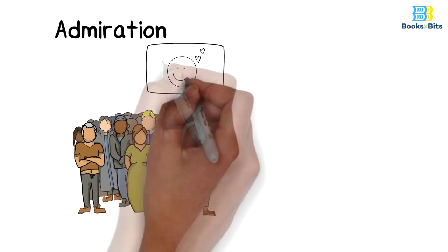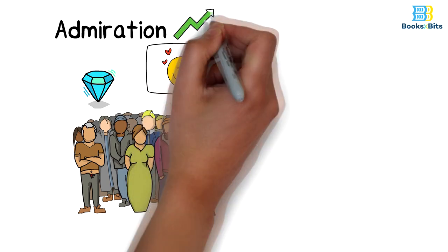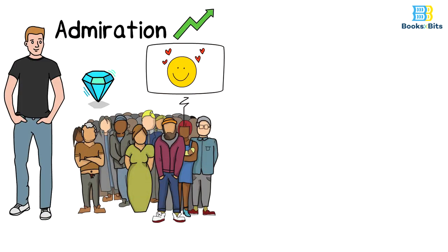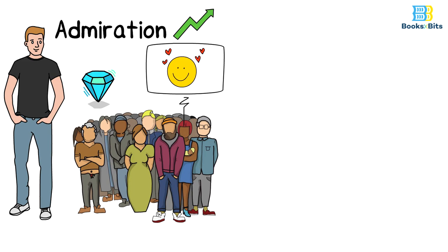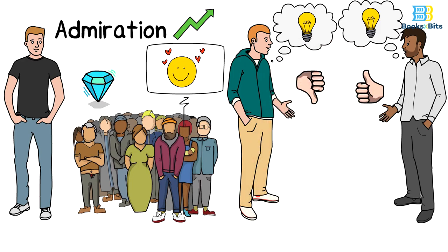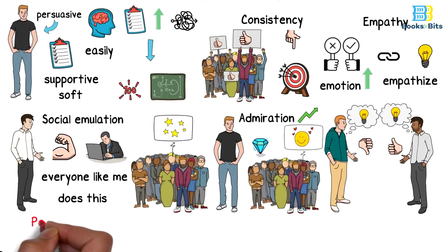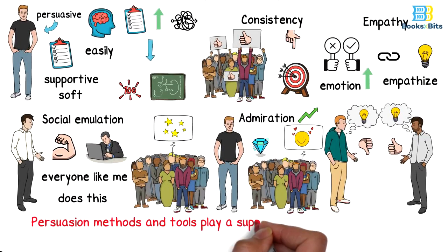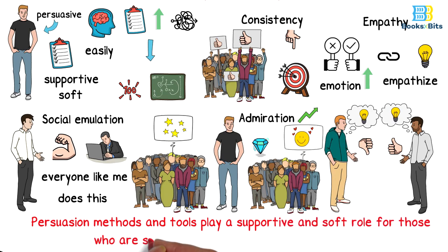Admiration. People's love for you is a very valuable trait that you have to develop if you want to persuade people. We all want to make deals with the people we love. It is much easier to accept ideas from someone you love than from someone you don't care about. Bit to remember, persuasion methods and tools play a supportive and soft role for those who are supposed to be the target of persuasion.